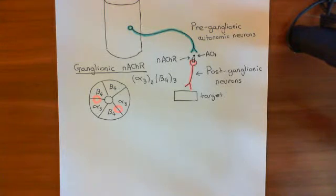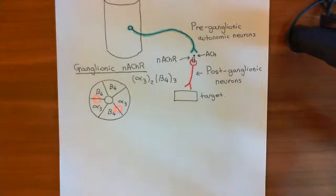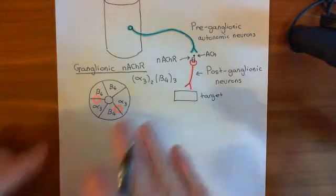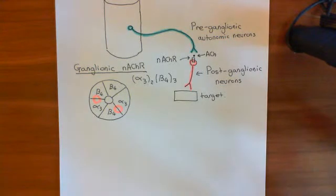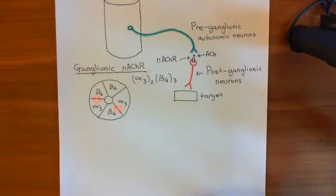We've seen the ones which are at skeletal muscle cells — the alpha-1, 2, beta-1, delta-epsilon heteropentameric acetylcholine receptor. We've also seen this ganglionic form of the nicotinic acetylcholine receptor, which is the alpha-3, 2, beta-4, 3 heteropentamer.